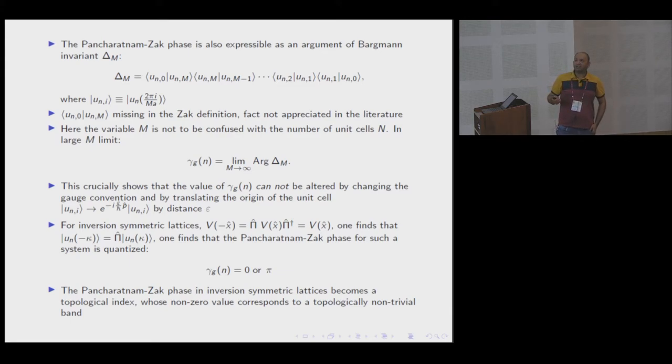We discovered this is a proper geometric phase: it's gauge invariant, invariant under static symmetries. If you shift your sample, constant translations in space do not affect it, as it should not. It is independent of total number of cells n. It better be, because n is not a parameter that appears in the Hamiltonian. For inversion symmetric lattices, we find it is quantized, 0 and π, so it can be thought of as a topological index.